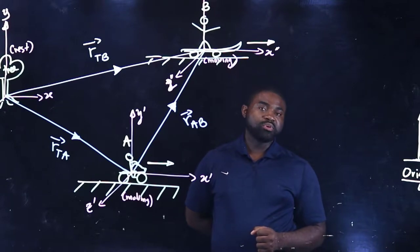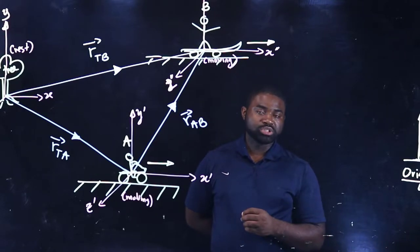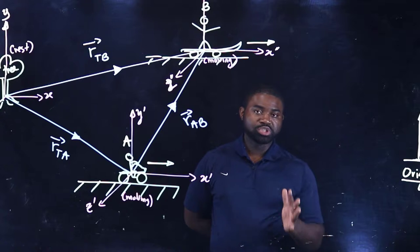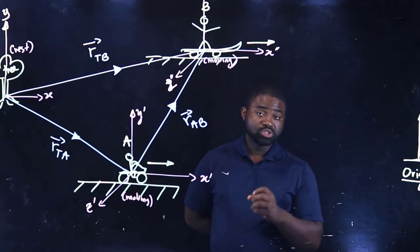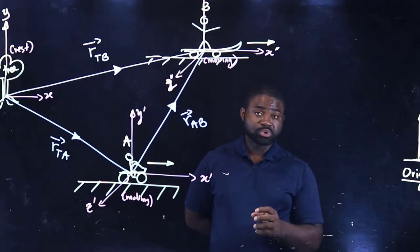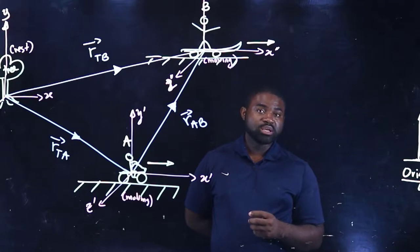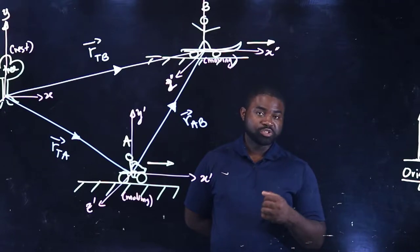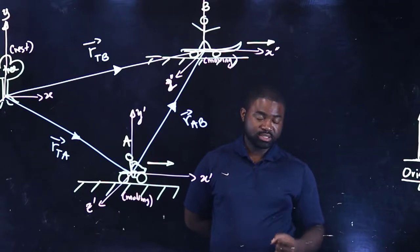Remember that an object is said to be in motion if its position is changing. And to measure the position of an object, we need a reference point and a coordinate system.